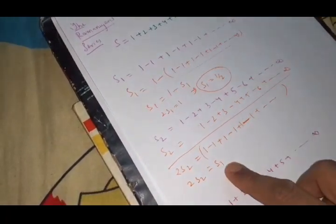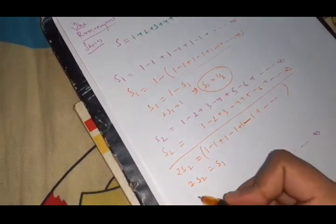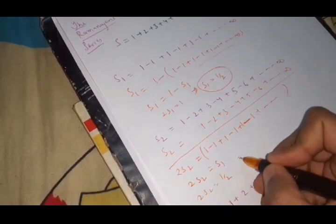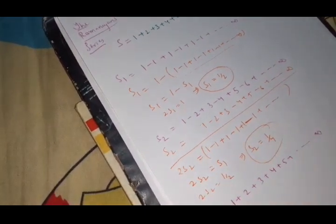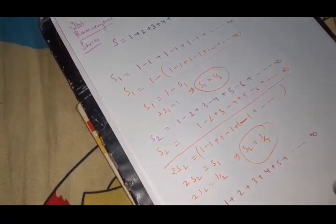So 2 of S2 is same as S1. And what you know the value of S1? S1 is half. So what you are getting? S2 is 1 by 4. Keep this in your head for further. S2 is 1 by 4.